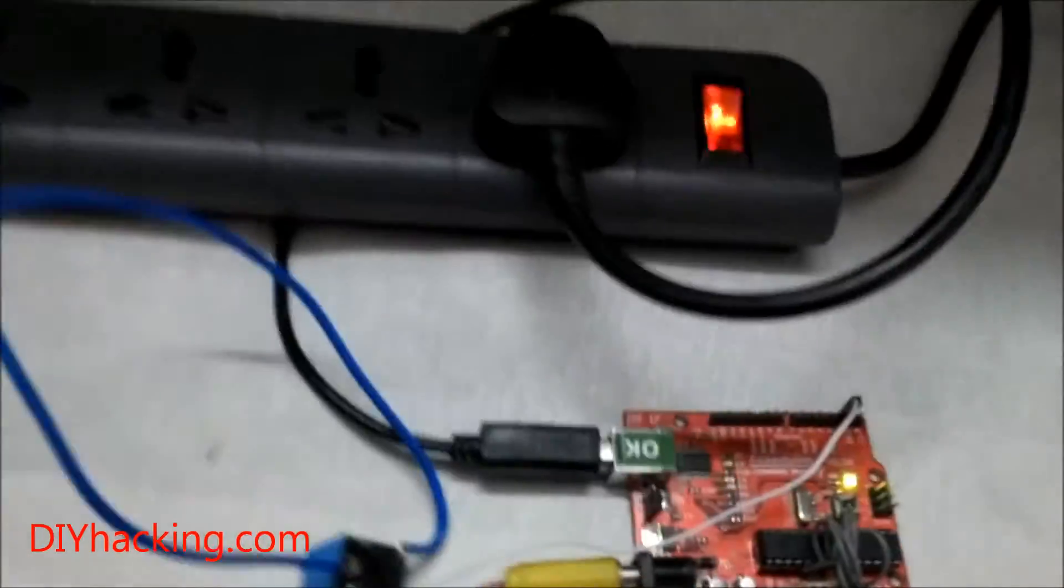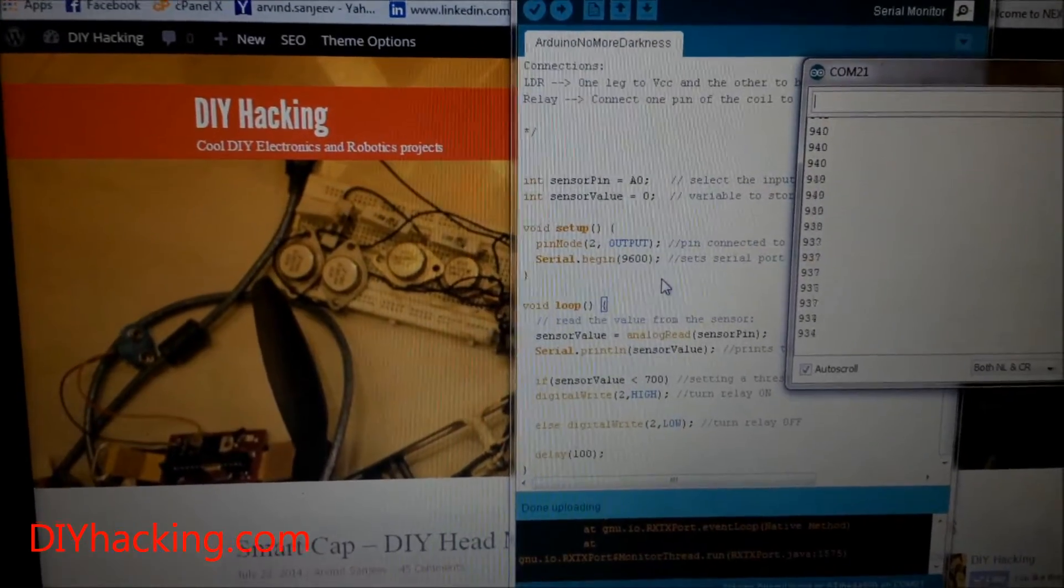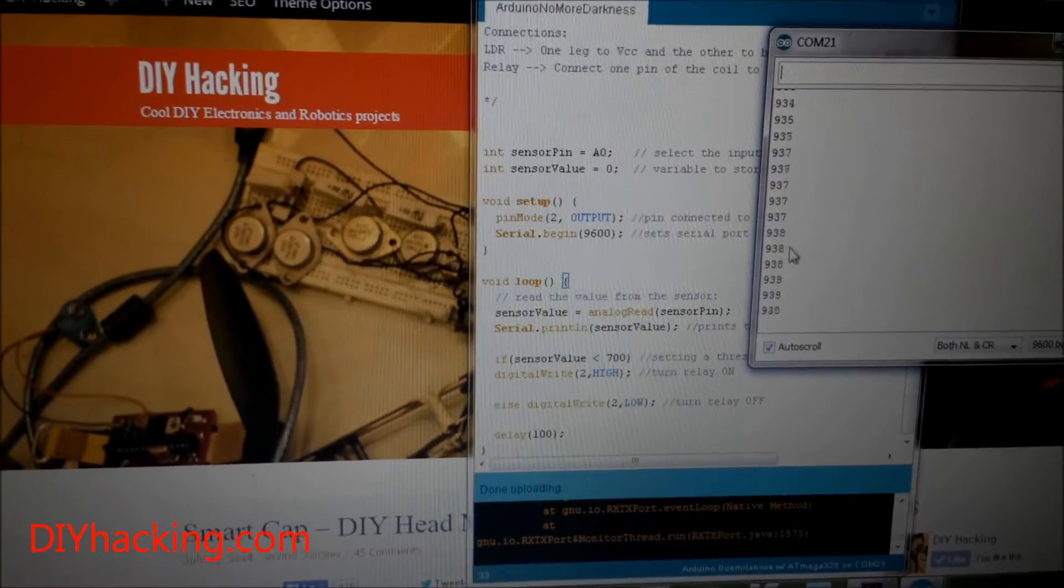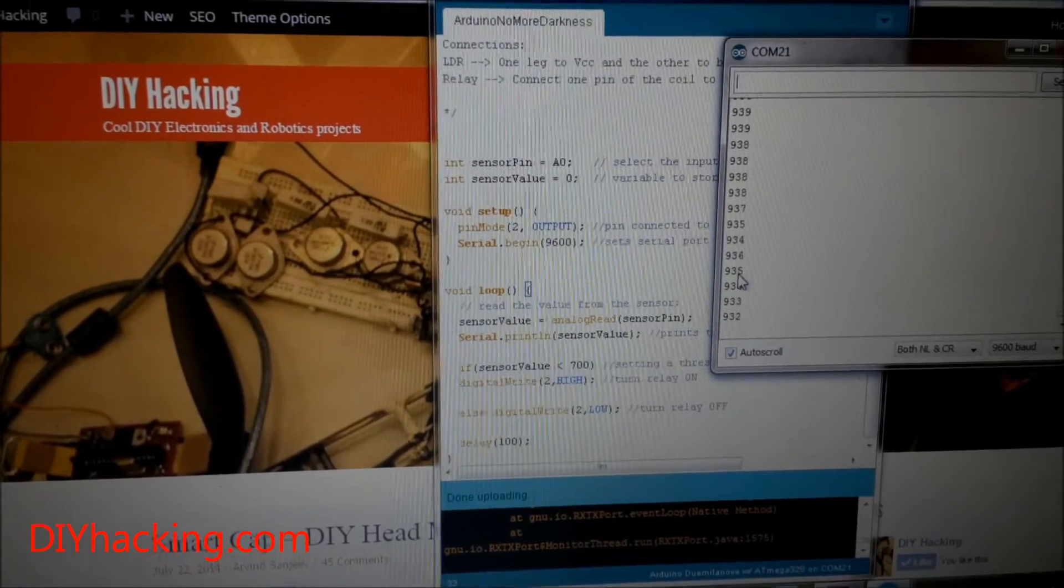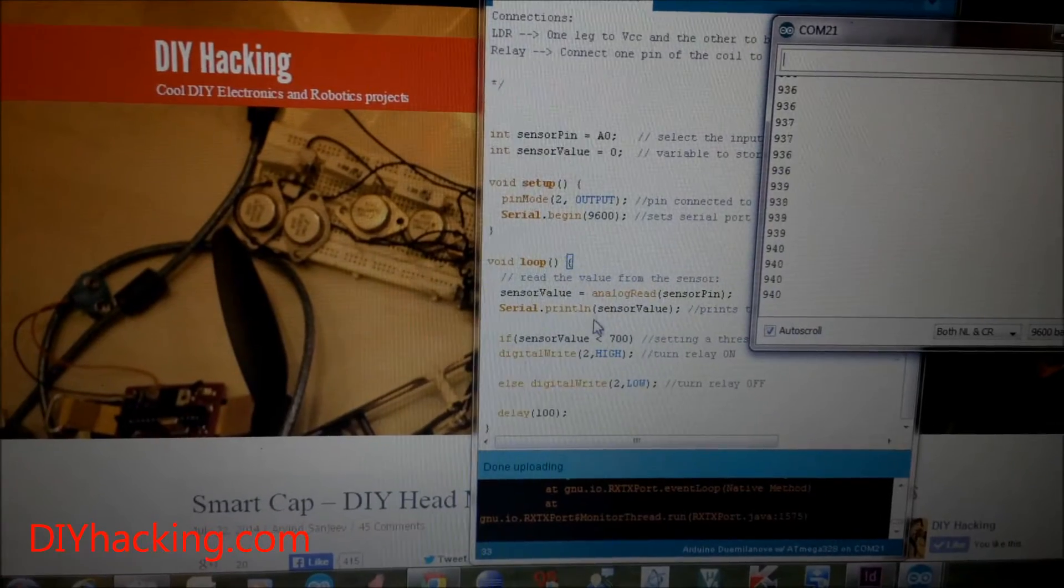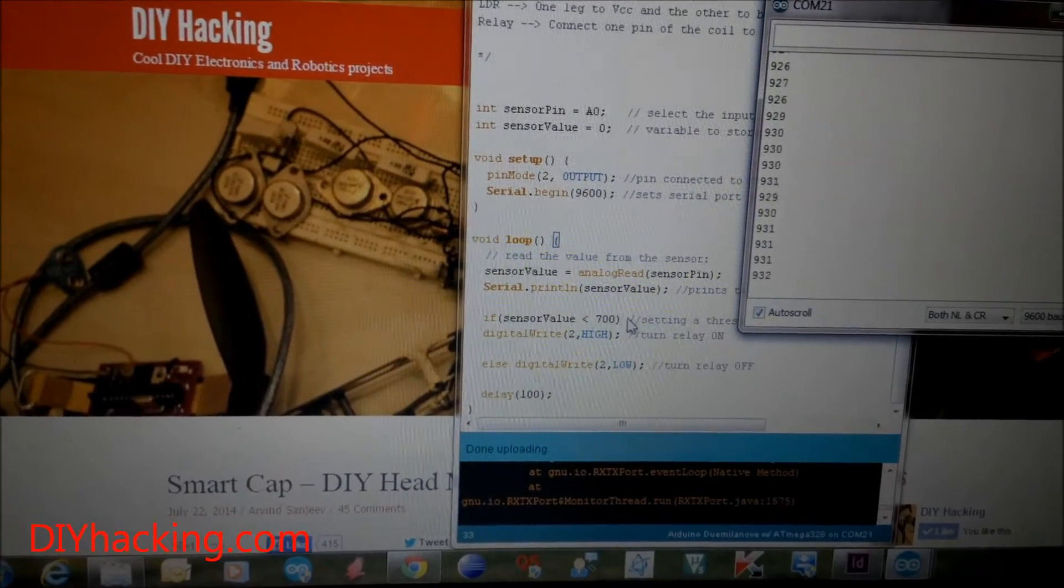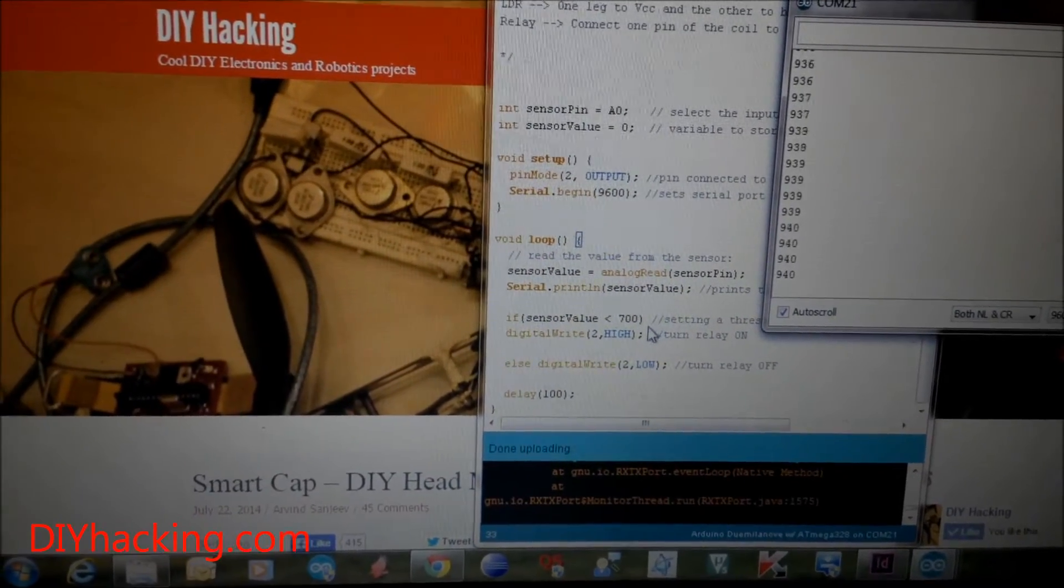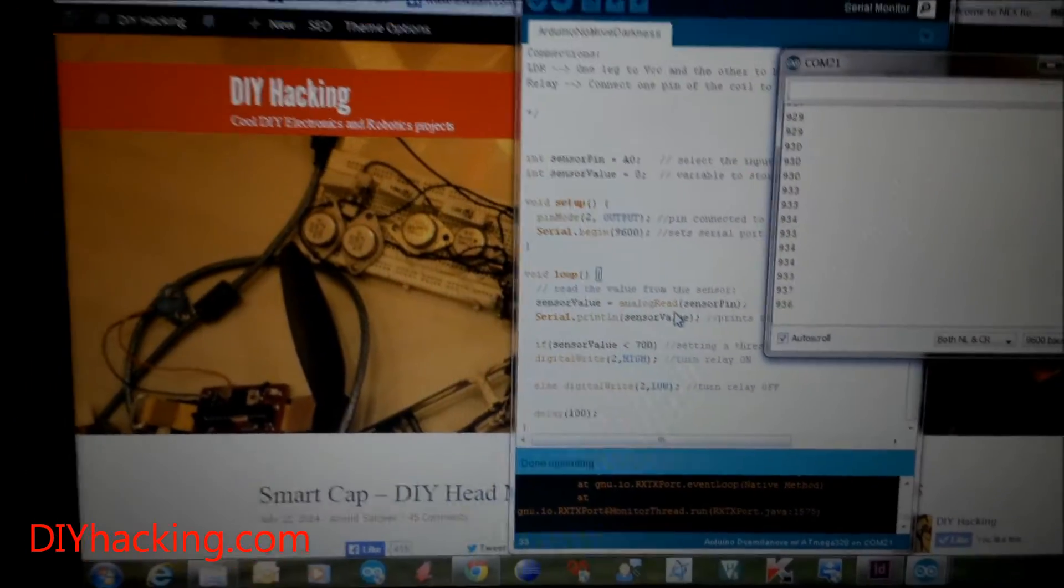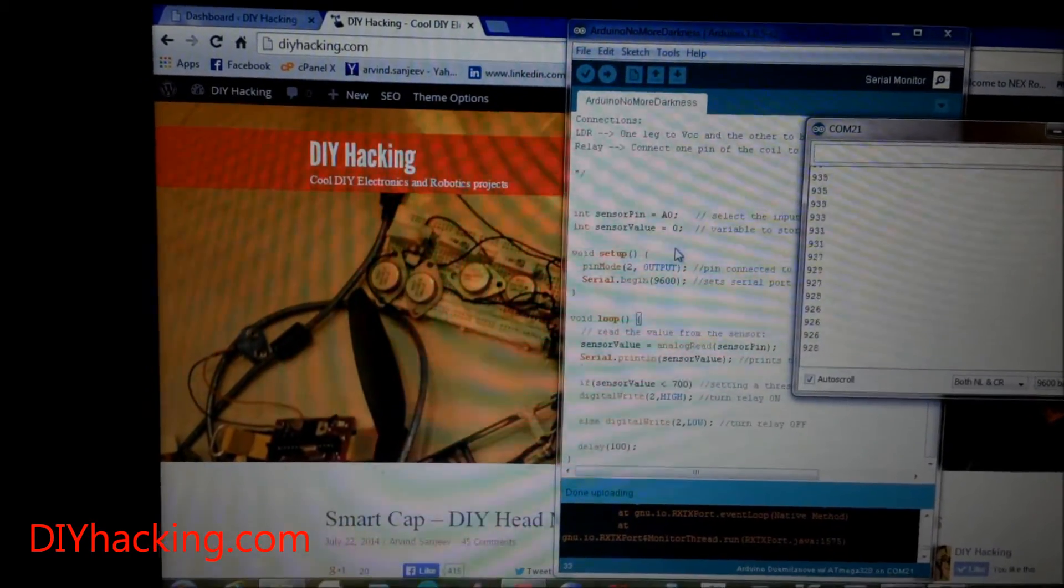This is the Arduino sketch that runs for this project. The values coming in here are the various light intensity values being read through the LDR and the Arduino. It's a very simple program. It initially sets a threshold value for light intensity, and whenever light intensity falls below that threshold, it turns the relay on. Otherwise, it turns it off. You can easily download this code through the link and run it.